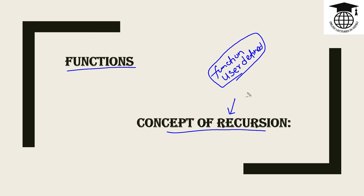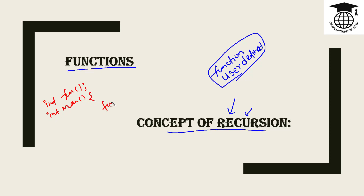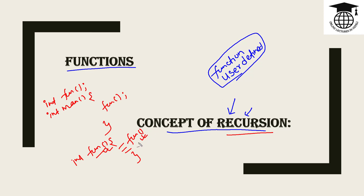When we know this, we can solve this problem using recursion. Recursion is the concept where a function calls itself. In a user-defined function, we declare the function, call it from the main function, and go to the function definition. In recursion, the function calls itself directly or indirectly.